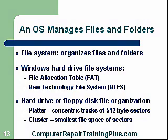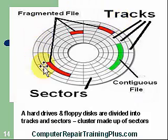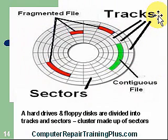For hard drive or floppy disk file organization, we have a platter. These platters have concentric tracks or circles divided up into sectors. Each sector is always 512 bytes. A cluster is the smallest file storage area, made up of sectors. You can see concentric circles around the platter called tracks, and each track is divided into sectors.